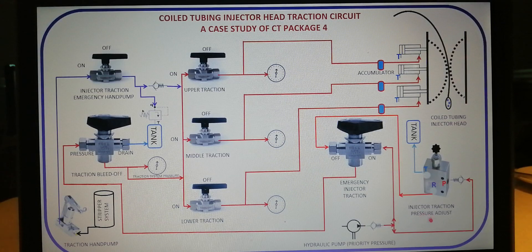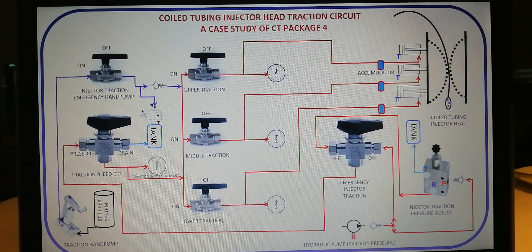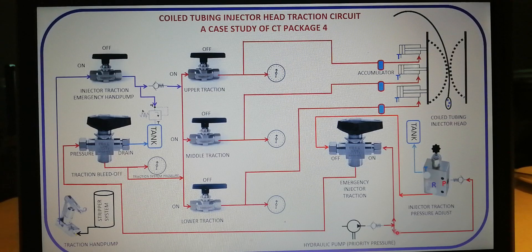Starting from Phase 1, that is traction control using injector traction pressure adjust. The traction system gets hydraulic supply from the priority system pump. On the line is a check valve that prevents flow back of hydraulic to the pump. The injector pressure adjust gets hydraulic supply from the pump to the pressure port of the valve.